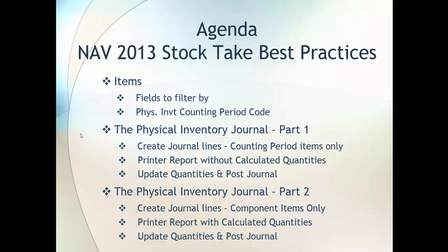We will then go to our physical inventory journal. I'm going to be using the physical inventory journal, but some of you might have full warehousing, in which case you will be using the warehouse physical inventory journal. I will point out the differences as we go through. When we look at our physical inventory journal we're going to do one option which will be to create our journal lines for those items that are using the accounting period code only.